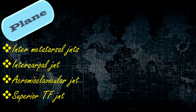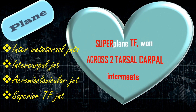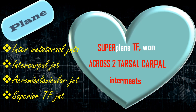Next is plane joints: intermetatarsal, intercarpal, acromioclavicular, and superior tibio-fibular joint. The story: superplane TF worn across two tarsal carpal intermates. Superplane TF is superior tibio-fibular joint. Across is acromioclavicular joint. Two tarsal carpal intermates — one is intercarpal joint and another is intermetatarsal joint.